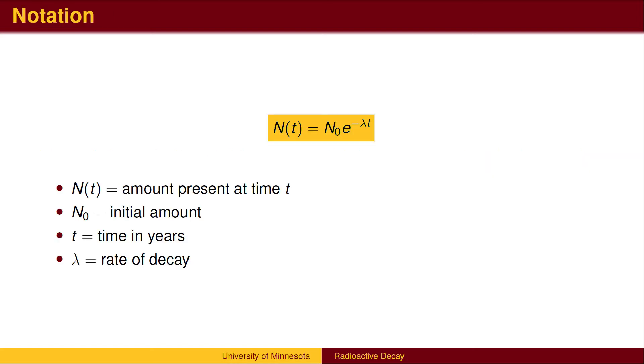We use a slightly different notation for radioactive decay, though the basic quantities are the same. N(t) represents the amount present at time t. N sub 0 is the initial amount. Lambda is the rate of decay, and t is time. Note the negative sign in the exponent. We expect a negative exponent since the amount of material is decreasing. The negative sign ensures that the decay rate is positive.